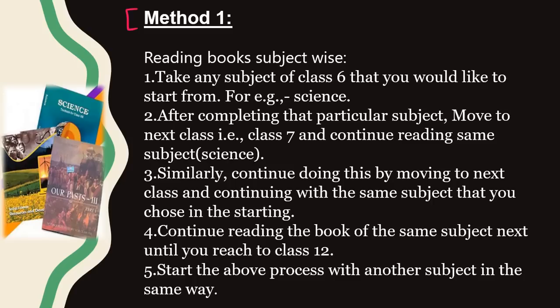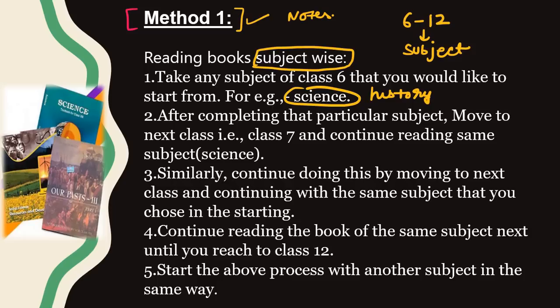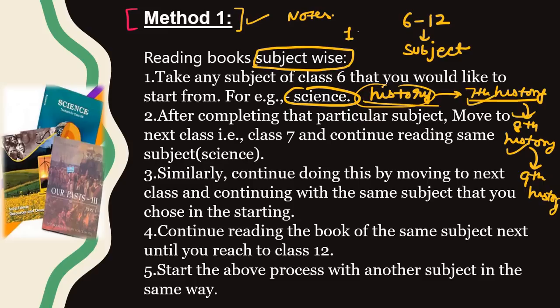Starting with Method 1. The first method is reading books subject-wise. Take NCERT books from class 6 to 12 subject-wise. For example, if you pick up the history textbook, start with class 6 history. After completing class 6, move to class 7 history, then class 8, then class 9, and continue till class 12.